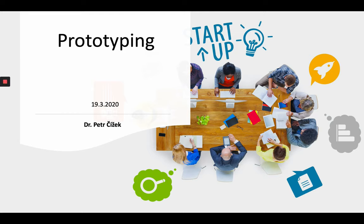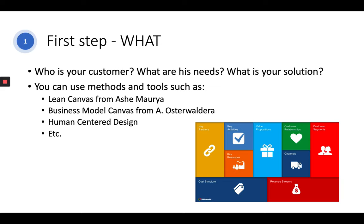Hello, today I would like to talk about the topic of prototyping. I would like to divide prototyping into two major steps. The first step is when you have a business idea and you need to clarify what you want to do, who is your customer, what are their needs, and what is your solution. You can use different methods and tools such as Lean Canvas, Business Model Canvas, or Human-Centered Design.